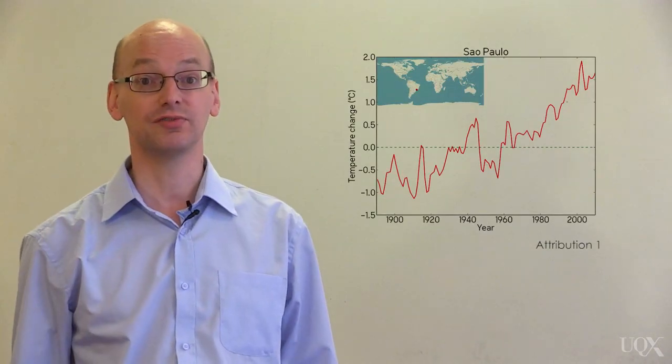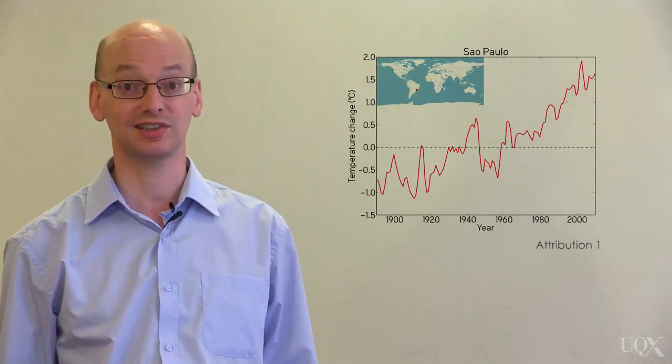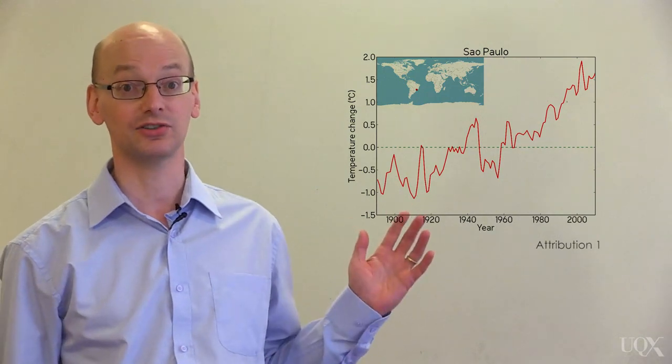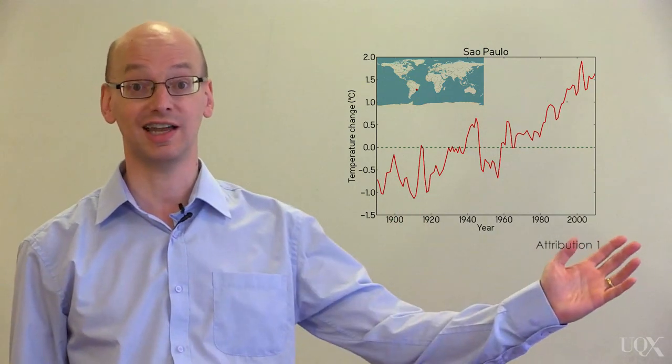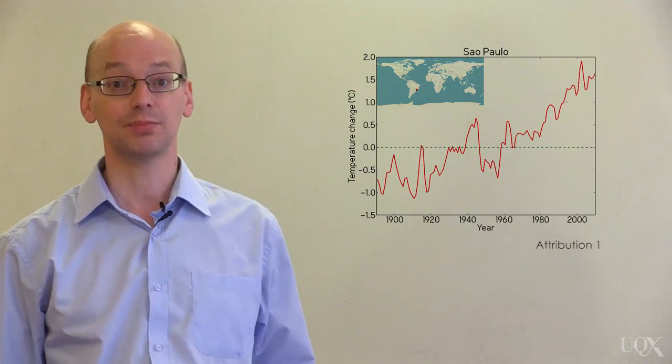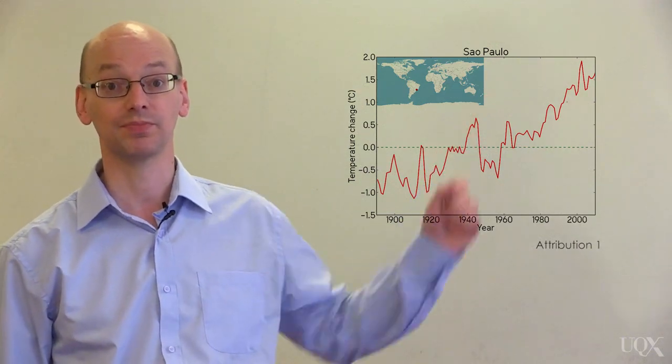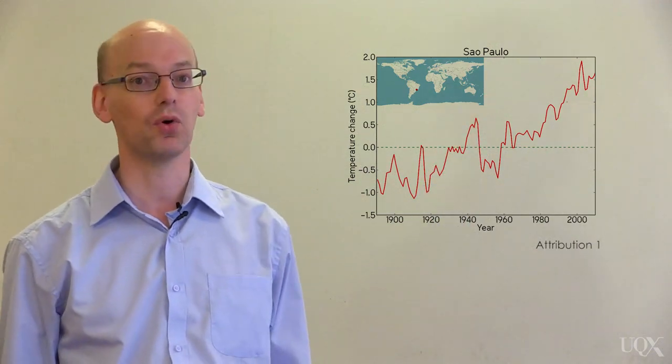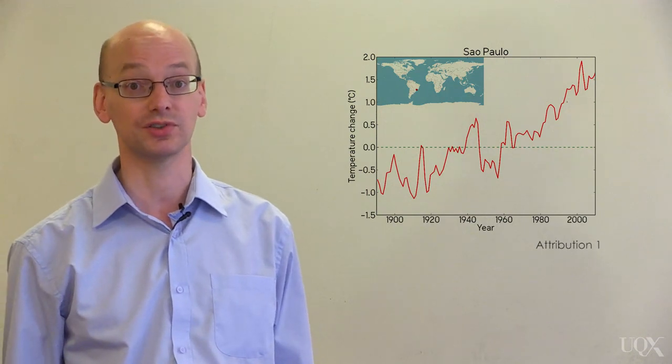Here is a temperature history for Sao Paulo covering the 20th century. 1900 is on the left and 2010 is on the right. Temperature runs from bottom to top. We can see that it has warmed in Sao Paulo over the course of the century.